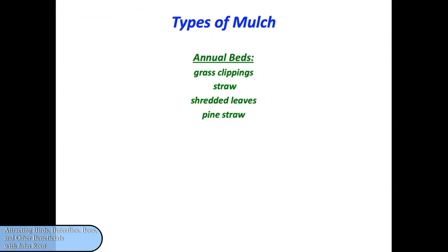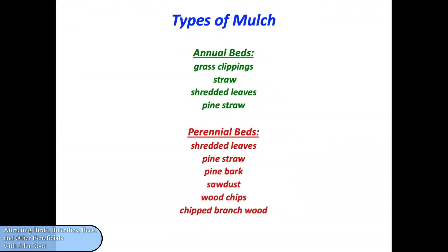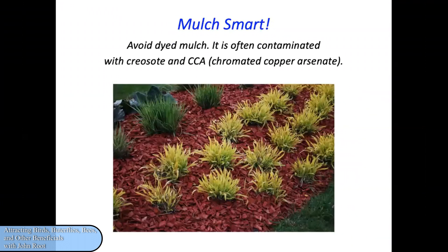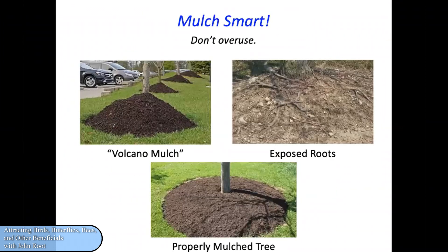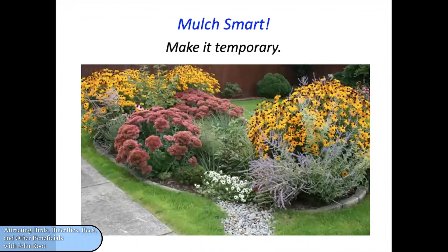If you're starting an annual bed for a vegetable garden or annual flowers, grass clippings, straw, shredded leaves, and pine needles are all great for that purpose. Pine needles do not make the soil acidic, as some even experts believe — that myth has been passed on for so long. For perennial beds, shredded leaves and pine needles are good, although shredded leaves will decompose fairly quickly. Pine bark, sawdust, wood chips, and chip branch wood are also great. Avoid dyed mulch — it's often contaminated with creosote and CCA. Don't overuse mulch. Volcano mulch around a tree is bad for the tree because roots will be encouraged to grow up into the mulch, and as the mulch decomposes, those roots will be exposed. Think about mulch as a temporary expediency — ultimately you want a lot of vegetation and won't have to keep reapplying mulch.